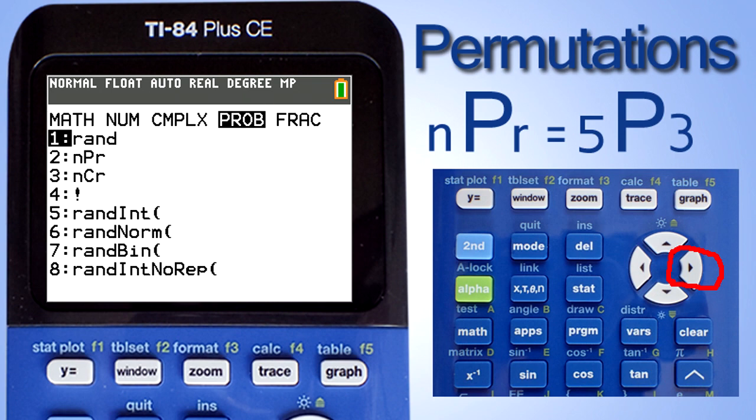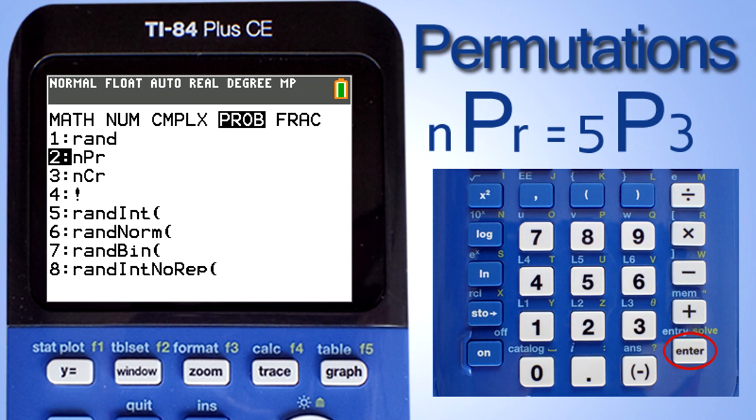PROB stands for probability. Now use the down arrow key and go to number 2, nPr. Press the enter key.